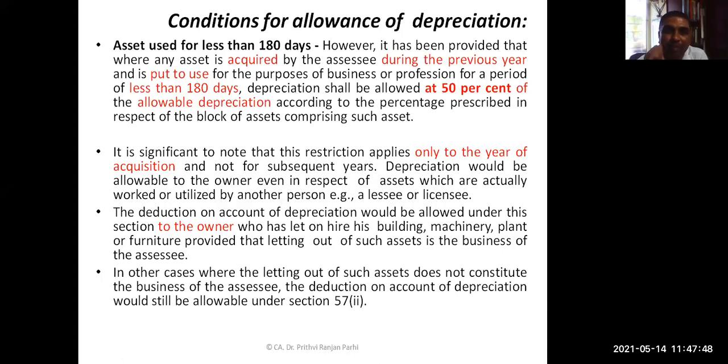If an asset is put to use for less than 180 days in the year of its acquisition, depreciation shall be allowed at 50% of the allowable depreciation. For example, if the original depreciation rate is 20%, it will be allowed as 10%. This is why businessmen plan to buy assets in the first half of the previous year — so the asset is used for more than 180 days and full depreciation can be claimed. That's all for today's session; next time we'll continue with more examples on how to calculate depreciation and use it for tax planning.